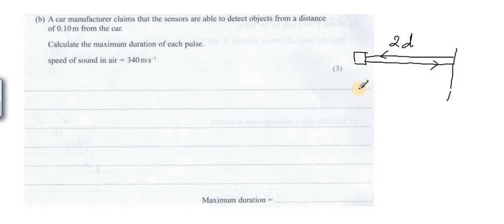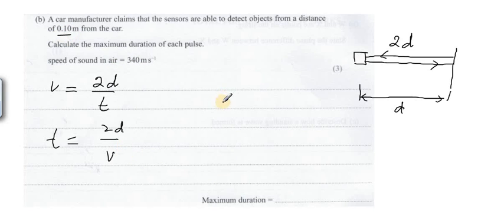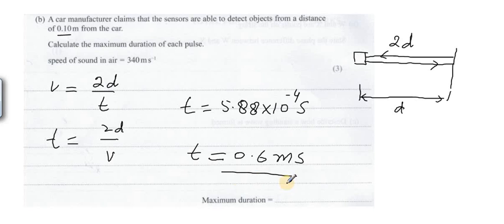The distance traveled by the pulse is twice d, if we take d as the one-sided distance. So the total distance is 2d. We must use the formula v equals 2d over t. If you rearrange for t, then t equals 2d over v. V is given and the distance one-sided is 0.1 meters. If you put the numbers you will have t equals 5.88 times 10 to the power minus 4 seconds, or if you wish to round it off, t is 0.6 milliseconds. So this is the duration.